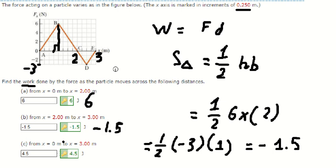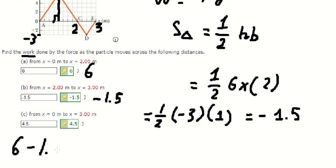And the last one, we want to find from 0 to 3, so we just sum two areas, and that is the final answer.